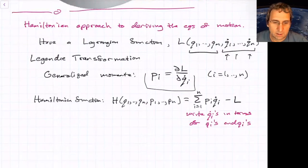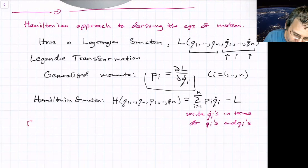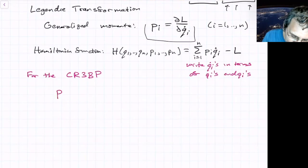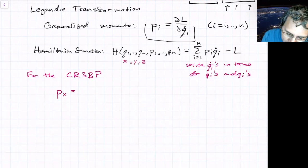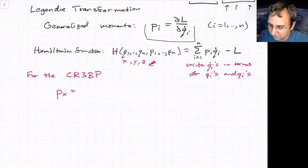So for the CR3BP, what do we get? We'll write px, because our generalized coordinates are x, y, and z. And then we've got x dot, y dot, z dot on the Lagrangian side. So the momentum, there's terminology related to this. This is called the momentum conjugate to the x variable. Remember what x was? That's the location of the particle in the rotating frame. And this will be partial L, partial x dot. And from what we had for L, this becomes x dot minus y.